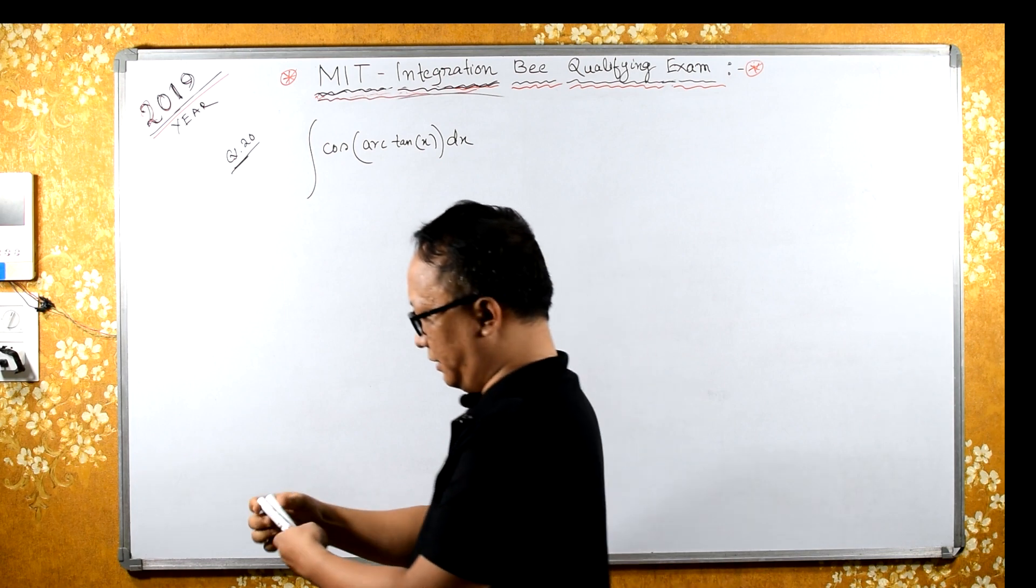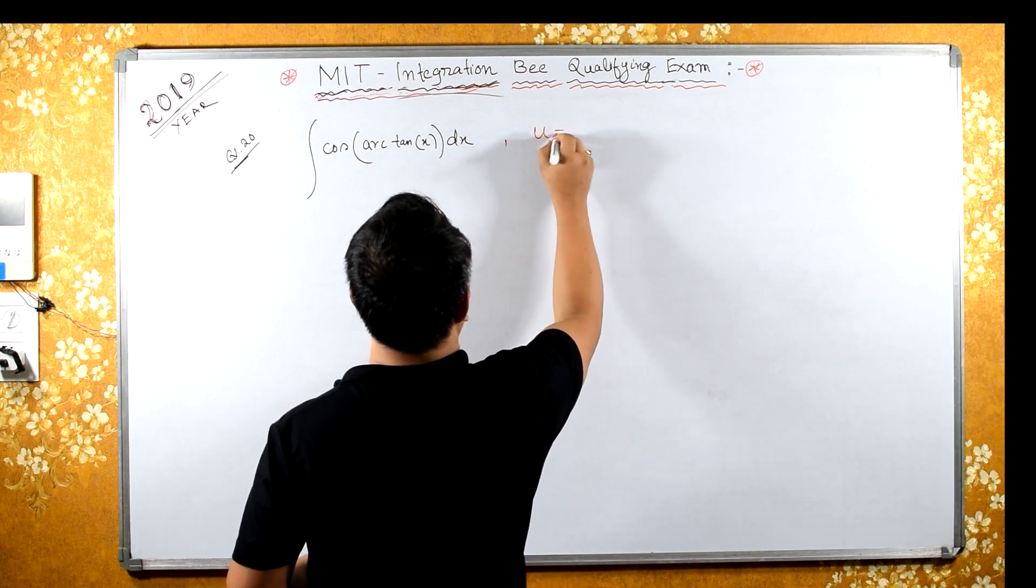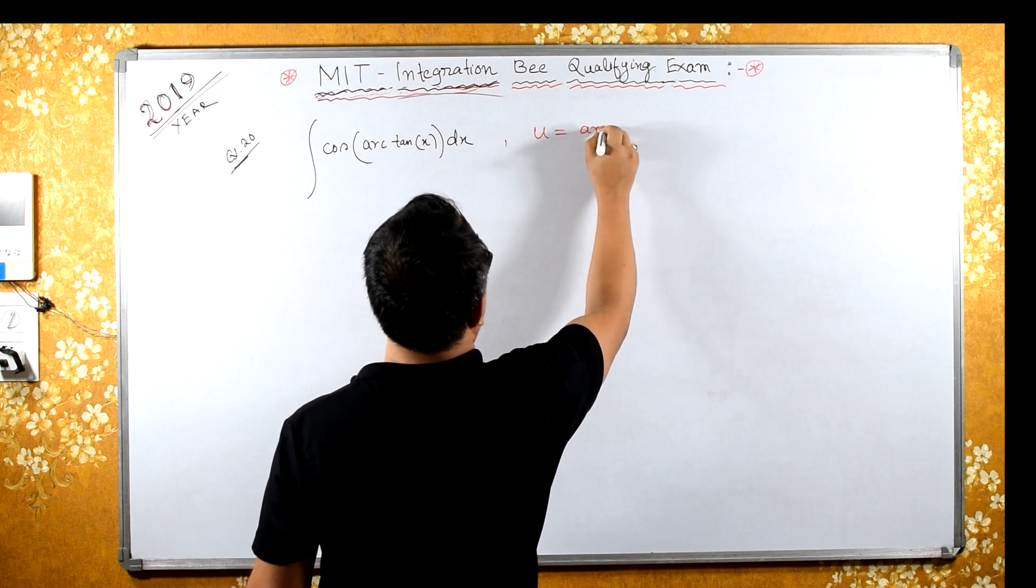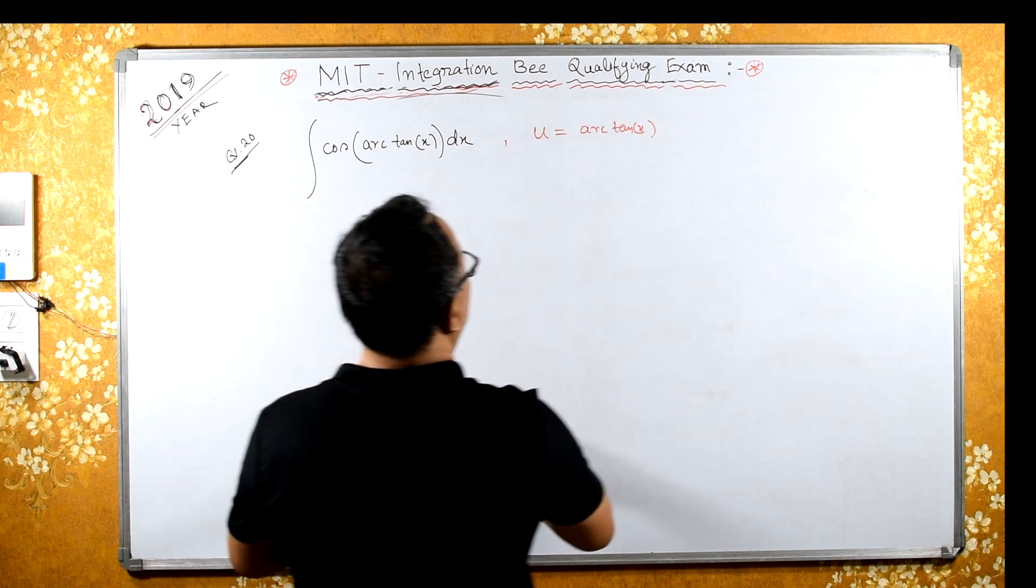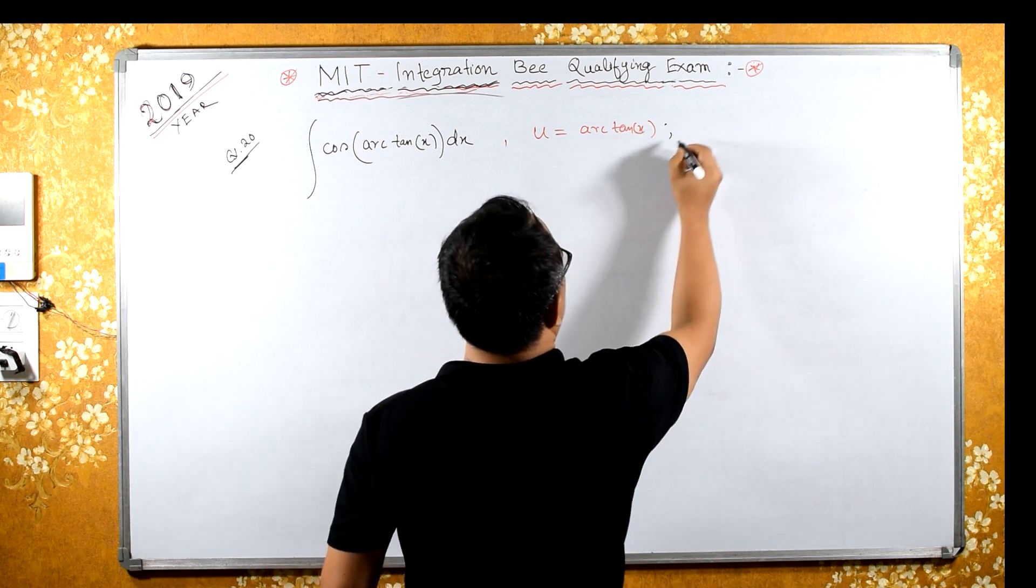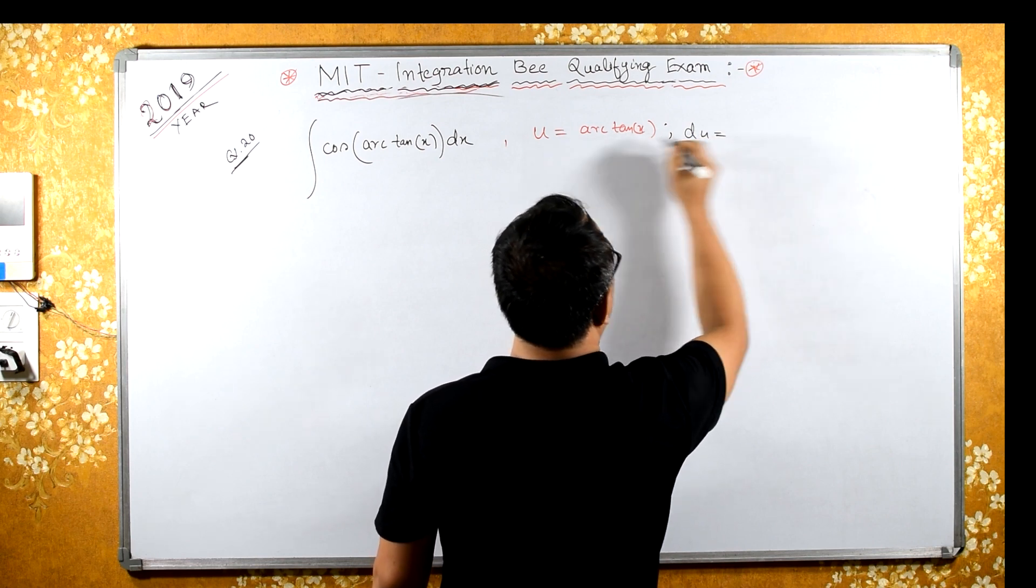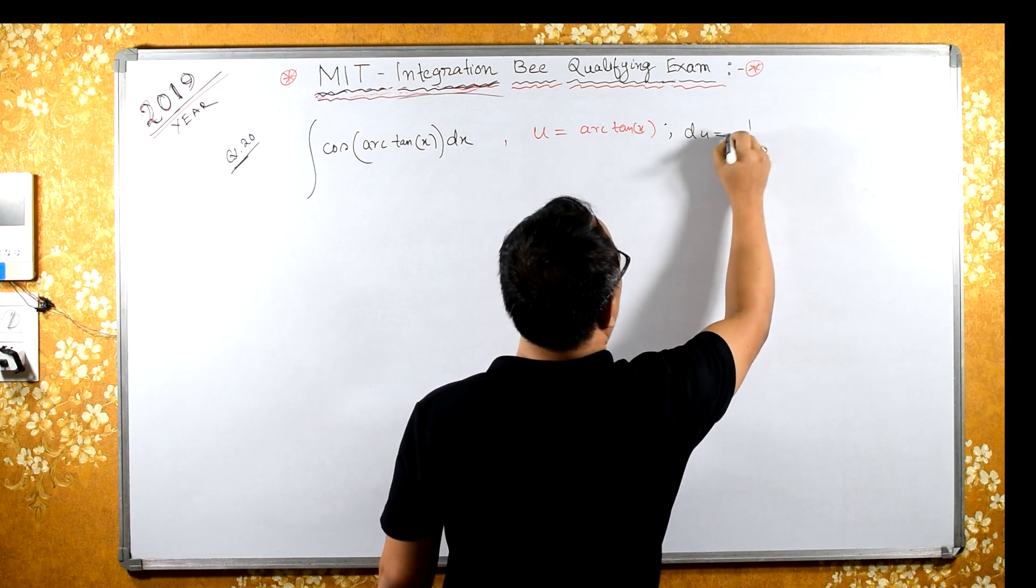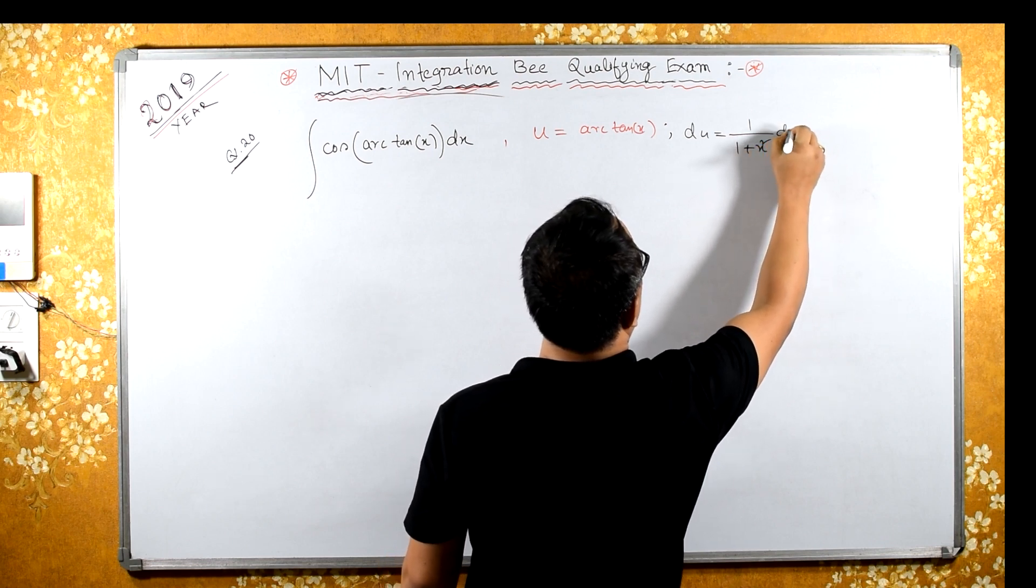Now in this we have to substitute. Let's try by substituting u equals to arctan(x). This implies du equals to differentiation of arctan(x), which is 1 over 1 plus x squared dx.